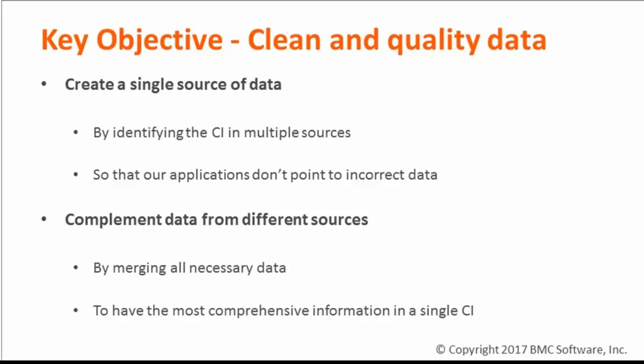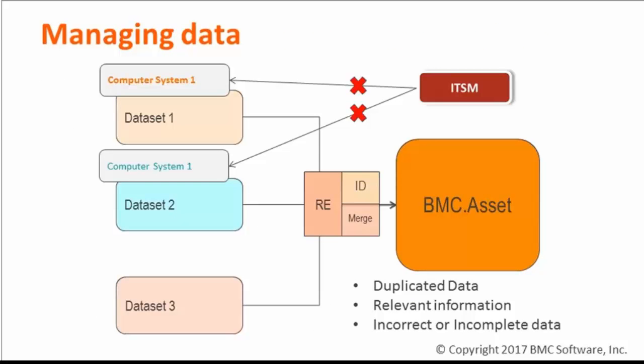You get to decide through merge precedence rules which data is more important depending on the source. Combining these two capabilities of the reconciliation engine, you now have only one CI which has the most current and comprehensive information from all your sources for your applications to use. In summary, reconciliation reads information from source data sets through identification and merge activities, delivering clean, current, comprehensive data into the golden data set. If the reconciliation engine were not there, no golden data set, no BMC Asset could exist.